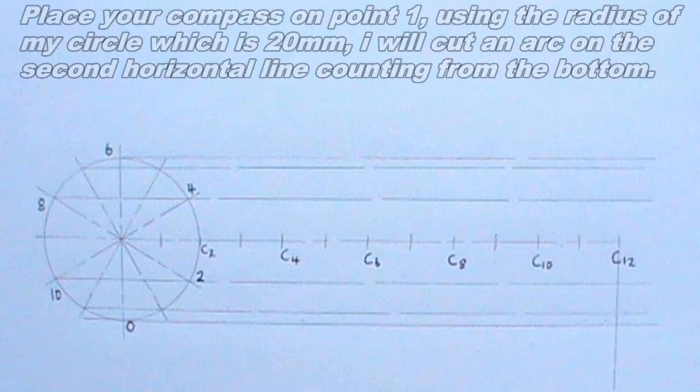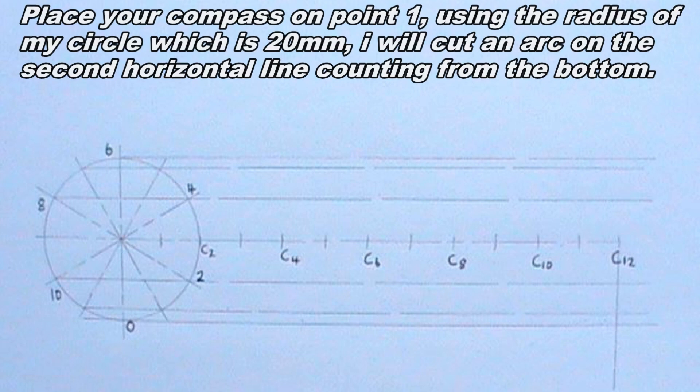Now I will place my compass on point 1, using the radius of my circle which is 20 mm. I will cut an arc on the second horizontal line counting from the bottom.